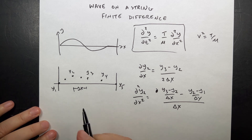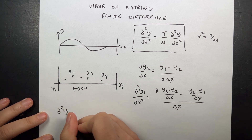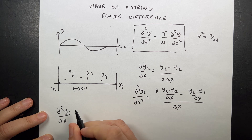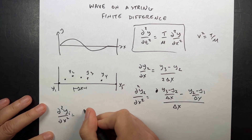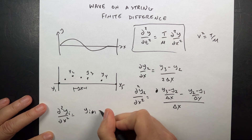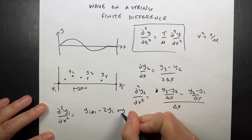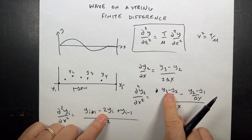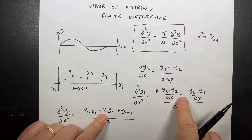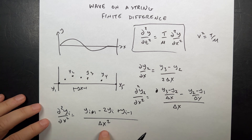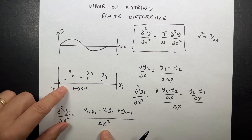For the generic case, the second partial with respect to x at point i equals yi+1 minus 2yi plus yi-1, all over delta x squared. You get that factor of 2 from combining the terms. That's the finite second derivative. But these values can change not just in position, but also in time.